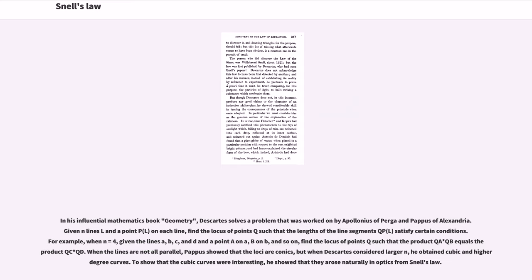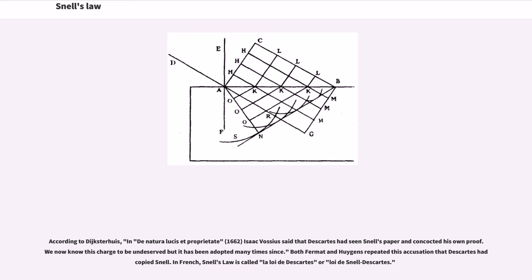According to Descartes' Huez, in De Natura Lucis et Proprietate, Isaac Vossius said that Descartes had seen Snell's paper and concocted his own proof. We now know this charge to be undeserved but it has been adopted many times since. Both Fermat and Huygens repeated this accusation that Descartes had copied Snell.